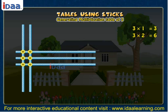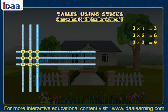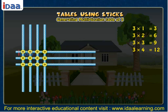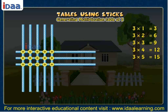If we put 3 sticks vertically, we shall get 9 points of intersection. If we put 4 sticks vertically, we get 12 points of intersection. If we put 5 sticks vertically, we shall get 15 points of intersection. If we put 6 sticks vertically, we shall get 18 points of intersection.